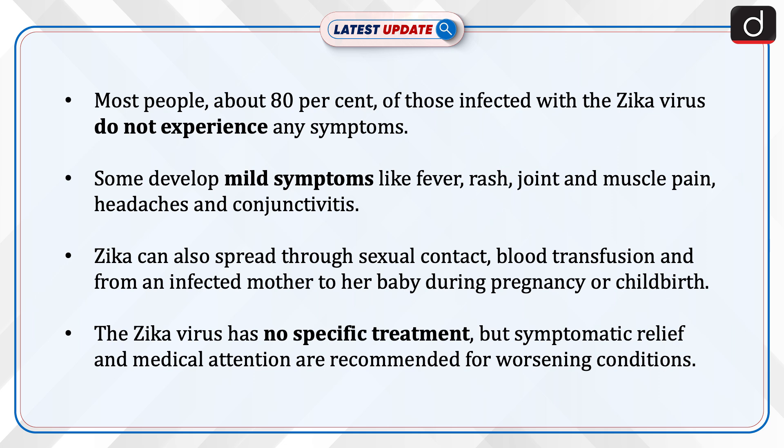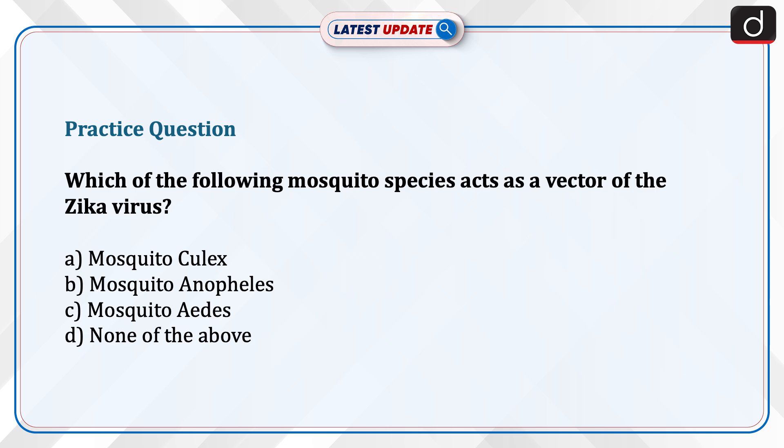Zika also spreads through sexual contact, blood transfusion, and from an infected mother to her baby during pregnancy or childbirth. The Zika virus has no specific treatment, but symptomatic relief and medical attention are recommended for worsening conditions.